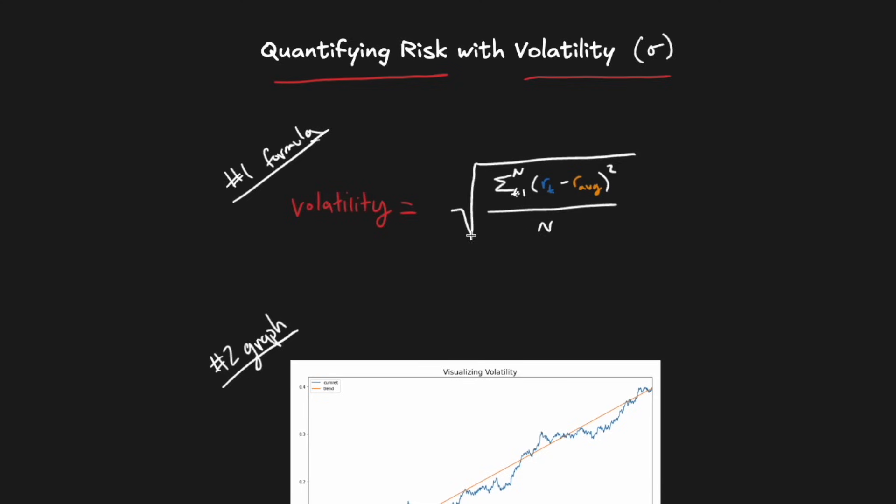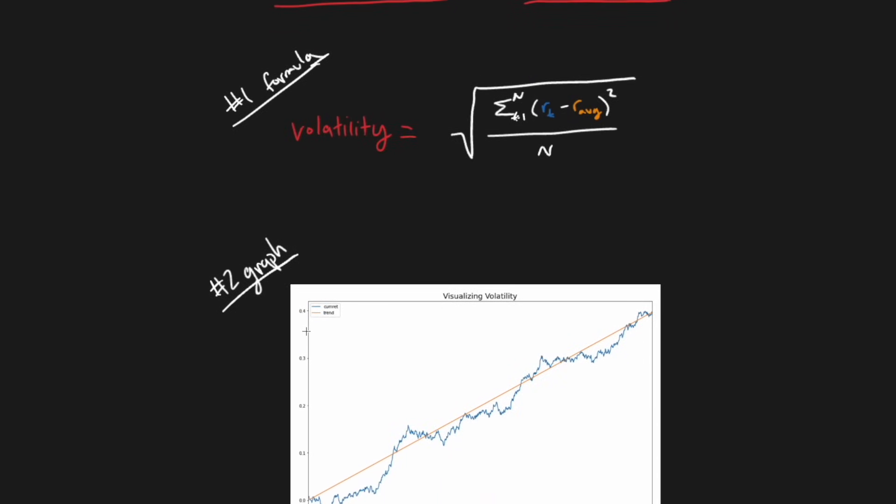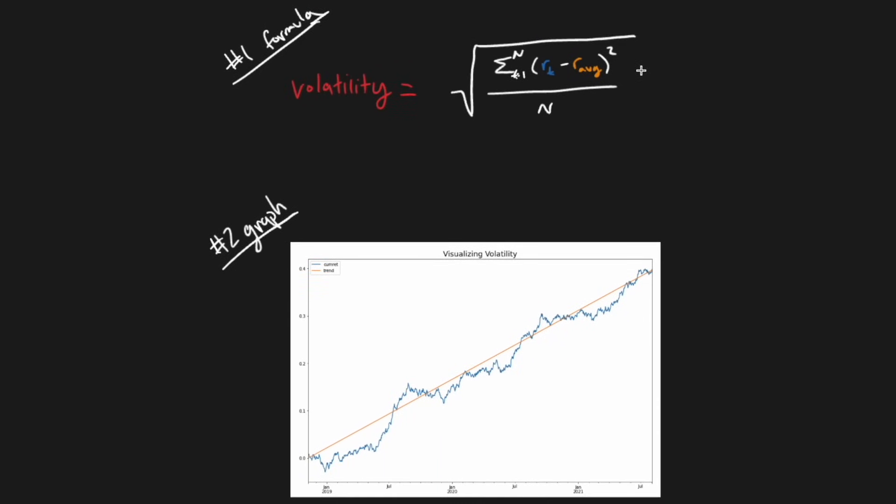In words, it computes the average of the square deviations from the mean return. That's quite a mouthful. I think it's a lot easier to understand volatility visually. The graph here represents the average return in the formula r-average by this orange trend line, and it represents the rt in the formula by the blue curve, which is the actual investment.